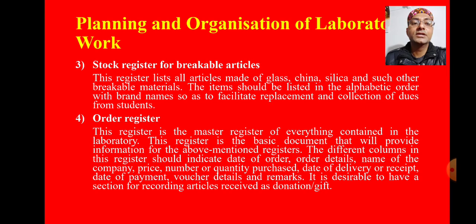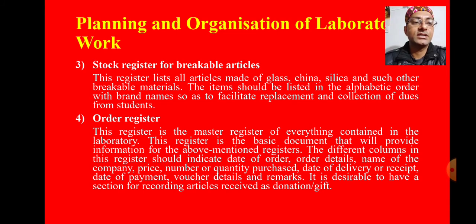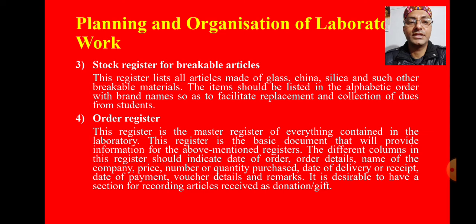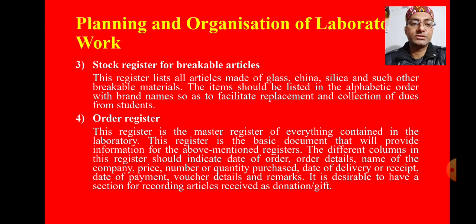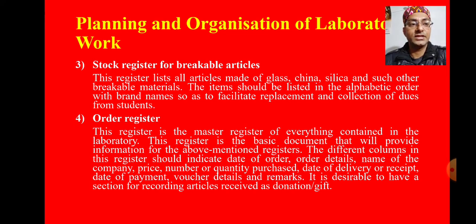The third is the stock register for breakable articles, primarily for glassware. This register lists all articles made of glass, china, silica, and other breakable materials. Items should be listed in alphabetical order and with brand names to facilitate replacement and collection of dues from students if any item is broken.